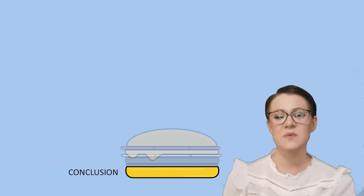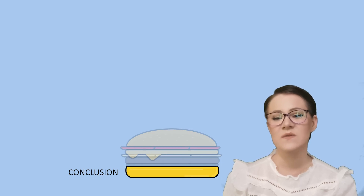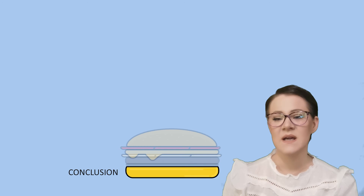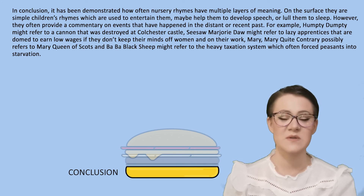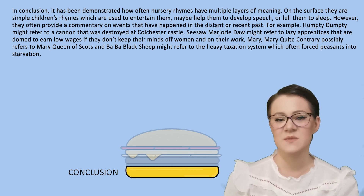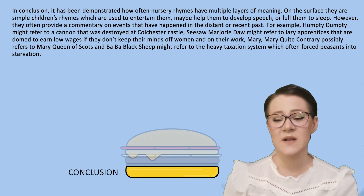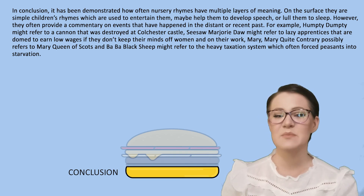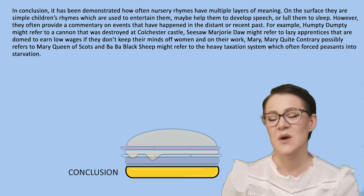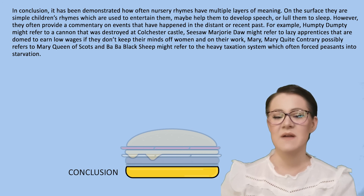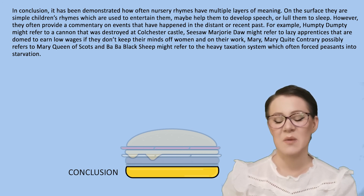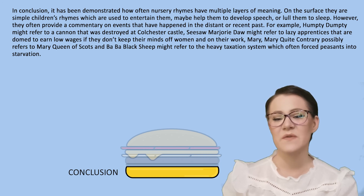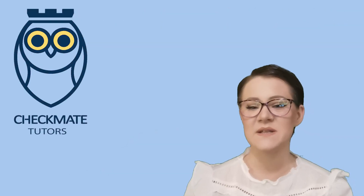Finally, moving on to the conclusion, which you will remember must restate what you have demonstrated and how you have done this. Therefore I have written: 'In conclusion, it has been demonstrated how often nursery rhymes have multiple layers of meaning. On the surface they are simple children's rhymes which are used to entertain them, maybe help develop their speech or lull them to sleep. However, they often provide a commentary on events that have happened in the distant or recent past. For example, Humpty Dumpty might refer to a cannon that was destroyed at Colchester Castle. Seesaw Marjorie Dore might refer to lazy apprentices that are doomed to earn low wages if they don't keep their minds off women and on their work. Mary Mary Quite Contrary possibly refers to Mary Queen of Scots, and Baa Baa Black Sheep might refer to the heavy taxation system which often forced peasants into starvation.'